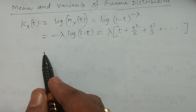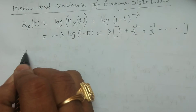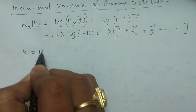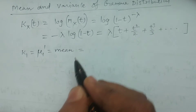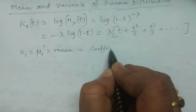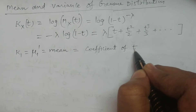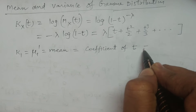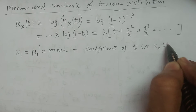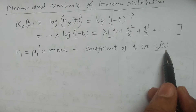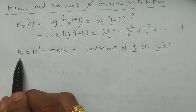As we know, from the cumulant generating function, the first cumulant k₁ is equal to μ₁', that is the mean. How to calculate this? It is the coefficient of t^1 / 1! — that is, the coefficient of t — in k(x,t). The coefficient of t gives the mean, which is the first cumulant.